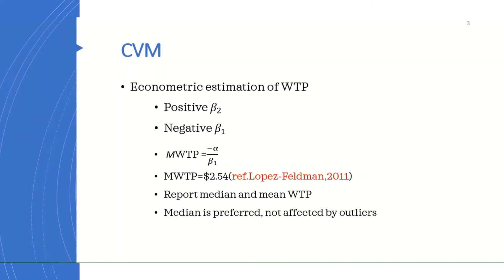During reporting, results from contingent valuation, especially the willingness to pay, both mean and median willingness to pay is reported, but median is preferred because it's not affected by outliers.